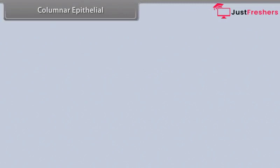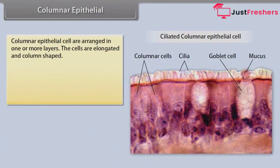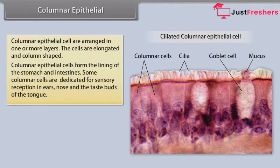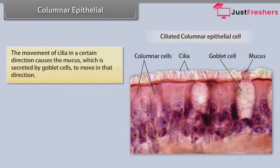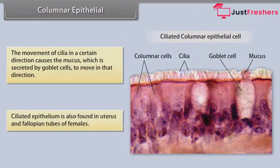Columnar epithelial cells are arranged in one or more layers; the cells are elongated and column shaped. Columnar epithelial cells form the lining of the stomach and intestines. Some columnar cells are dedicated for sensory reception in ears, nose and the taste buds of the tongue. If the columnar epithelial cells possess cilia — fine hair outgrowths — then they are called ciliated columnar epithelium. The movement of cilia in a certain direction causes the mucus, secreted by goblet cells, to move in that direction. Ciliated epithelial cells are also found in the uterus and fallopian tubes of females.